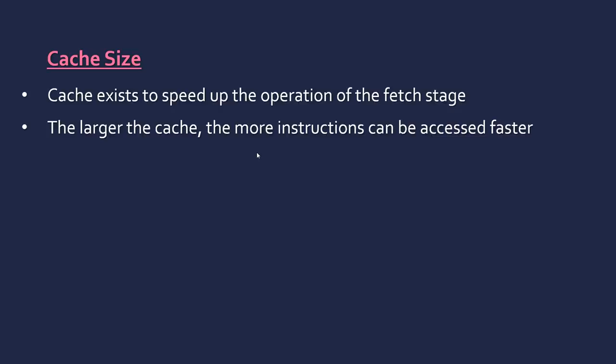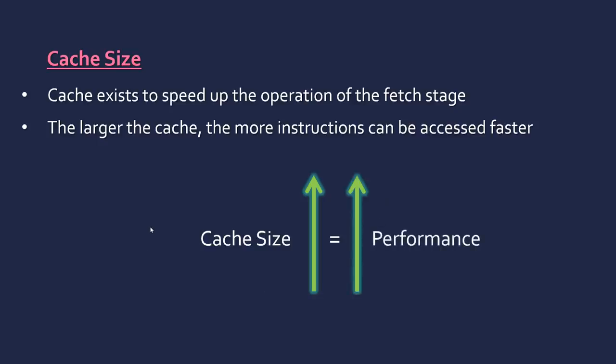The cache is always going to be smaller than your RAM, but if you increase it slightly, you can put more instructions in it and they are more likely to be accessed. When you search the cache for an instruction and it's there, that's called a cache hit; if you search the cache and it's not there, that's called a cache miss. The more instructions are stored there, the more likely you are to get a cache hit and the speed will increase — but obviously up to a limit. Increasing cache size in the order of kilobytes can increase performance because more instructions can be accessed faster.